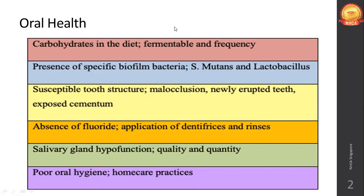Glossitis — inflammation of the tongue — could deteriorate your oral hygiene. Glossitis, mucositis, and angular stomatitis are all symptoms we have discussed in detail during our vitamin B complex classes. So vitamin B complex is also an important factor when it comes to oral health.